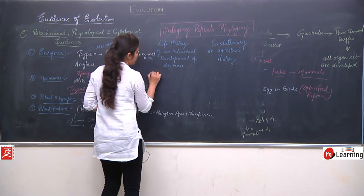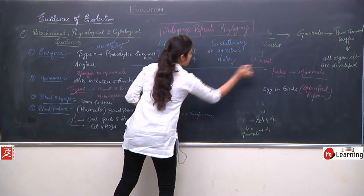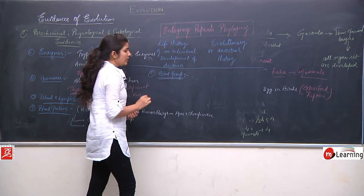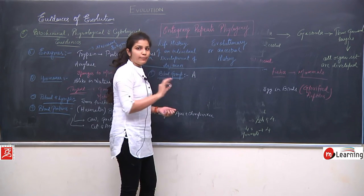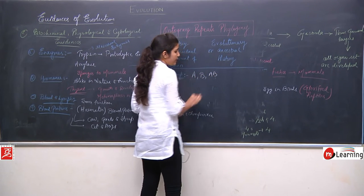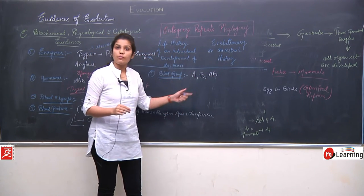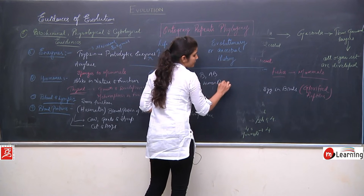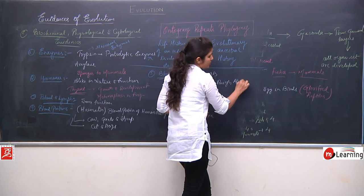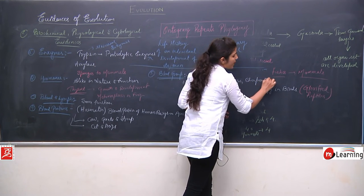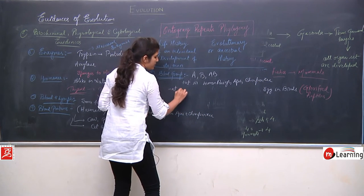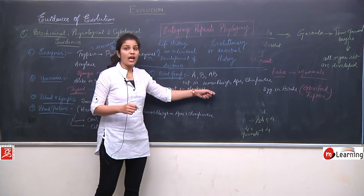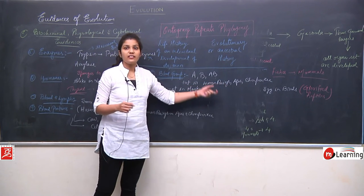The next example is blood groups. We know that blood groups exist in the form of A, B, and AB. The A and B system of blood groups is present in human beings, apes, and chimpanzees, but they are absent in monkeys. This also shows that human beings are closer to apes and chimpanzees than to monkeys.